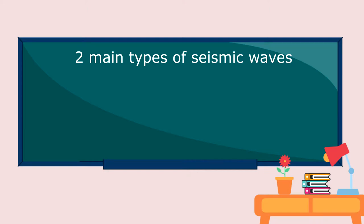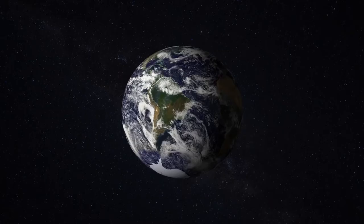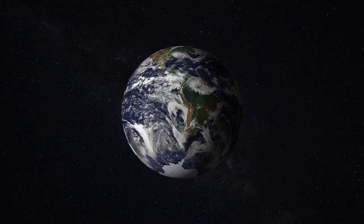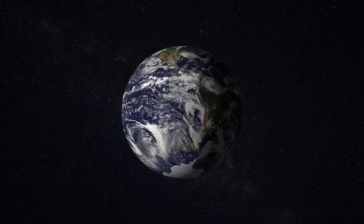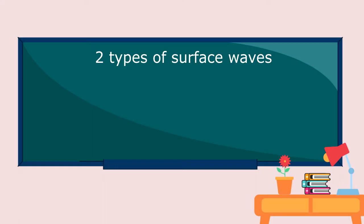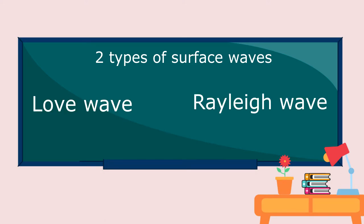There are two main types of seismic waves, the body wave and surface wave. Do you know that surface waves can only travel through the surface of the Earth? They arrive after the P wave and S waves. There are two types of surface waves, the love wave and Rayleigh wave.